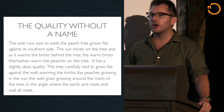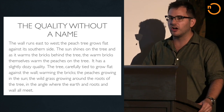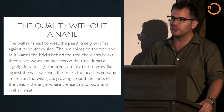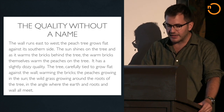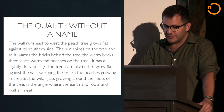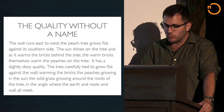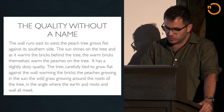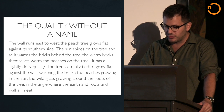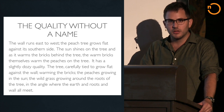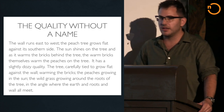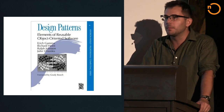Alexander doesn't talk in terms of pieces of homes — he talks in terms of their totality. At the beginning of A Timeless Way of Building, he describes a cottage in the British countryside: 'The wall runs east to west. The peach tree grows flat against the southern side. The sun shines on the tree, and as it warms the bricks behind the tree, the warm bricks themselves warm the peaches on the tree. It has a slightly dozy quality.' There's a wholeness, a holistic quality that is not easily reduced. But of course we're software people — and so we tried to reduce it anyway.